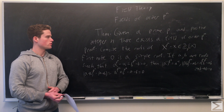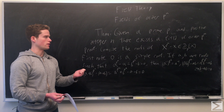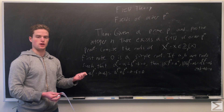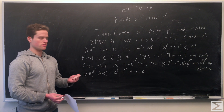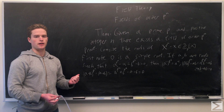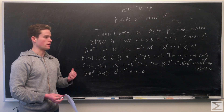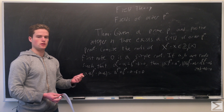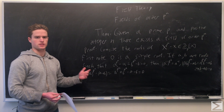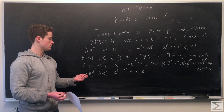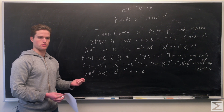First, we note zero is a simple root of this polynomial — you can factor out the x and note x^(p^n - 1) minus 1, as zero is not a root of that. Next, if a and b are roots of our polynomial, we're going to show the inverse of a is a root, a times b is a root, and a plus b is also a root. So it's closed under addition, multiplication, and inverses, and that will show the elements a, b form our field. The last step will be to show they're unique.